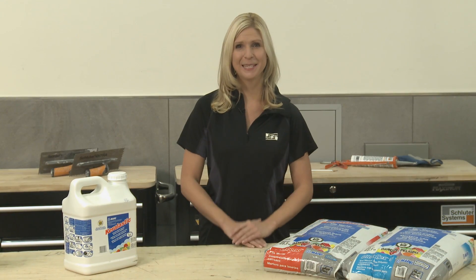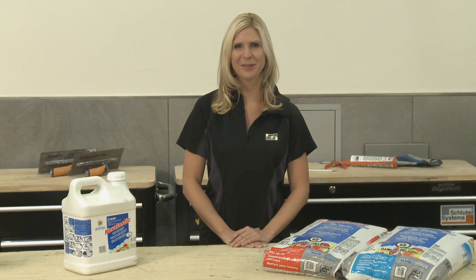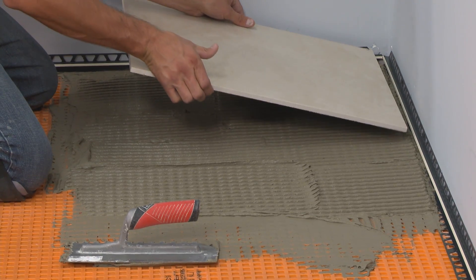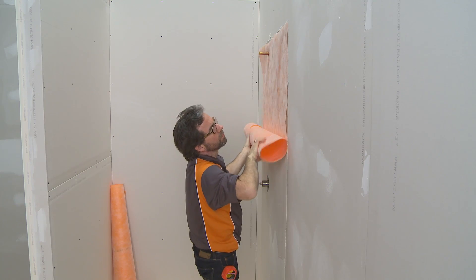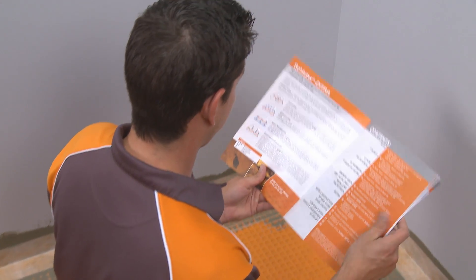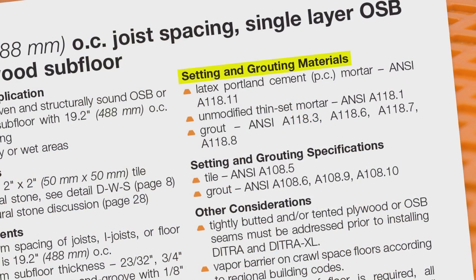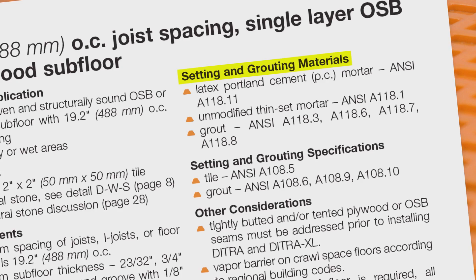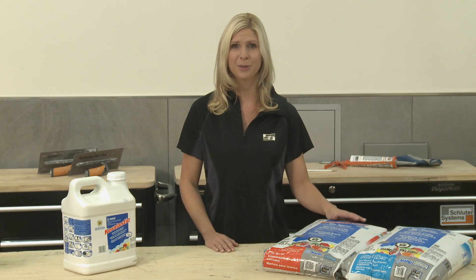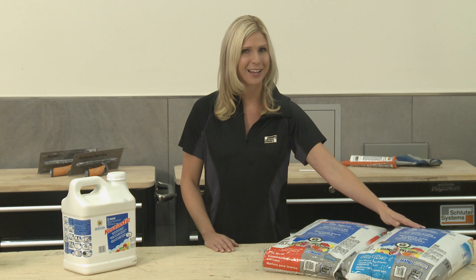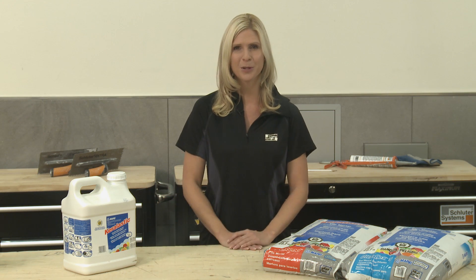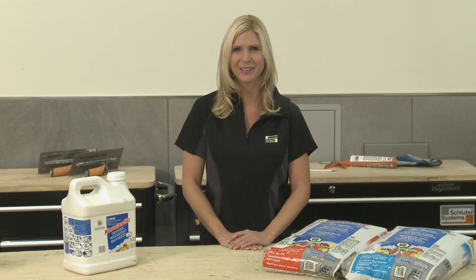Welcome to the Schluter Systems tips and tricks video series. When installing Schluter Systems membranes and tile, it's important to select the appropriate setting materials. Our systems installation handbooks include various details and indicate the type of thinset mortar to use in each application. Today I'm going to explain the difference between unmodified and modified thinset mortar and give you some tips to identify each type when purchasing your tile installation materials.